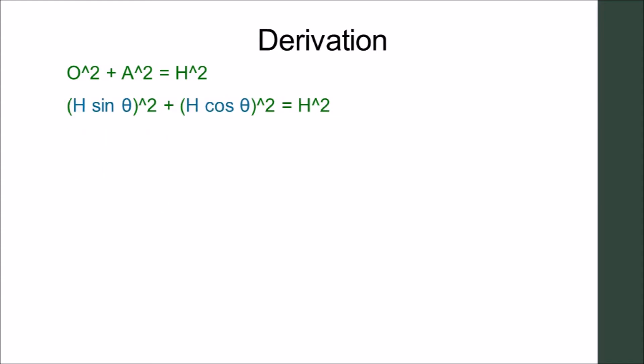Make a substitution for O and A. We then have H² times sin²θ plus H² times cos²θ equals H².